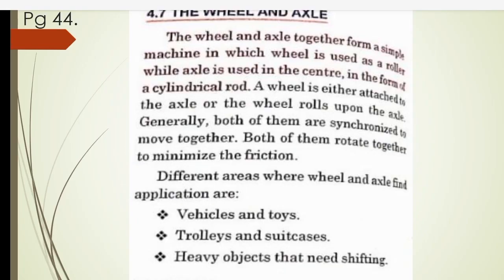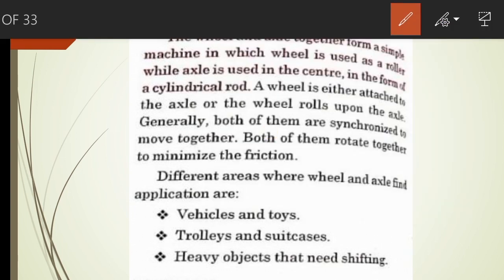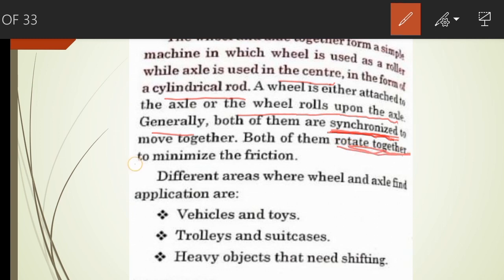Let's read the topic for better understanding. The wheel and axle together form a simple machine in which the wheel is used as a roller, while the axle is used in the center in the form of a cylindrical rod. A wheel is either attached to the axle, or the wheel rolls upon the axle. Generally, both of them are synchronized — meaning they cause two things to work at the same time. When the wheel rotates, the axle also rotates, and when the axle rotates, the wheel also rotates. Both rotate together to minimize friction.